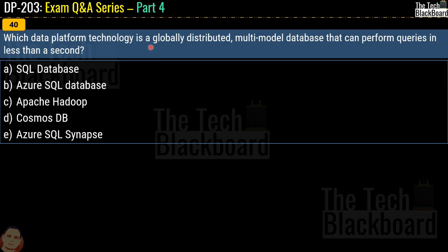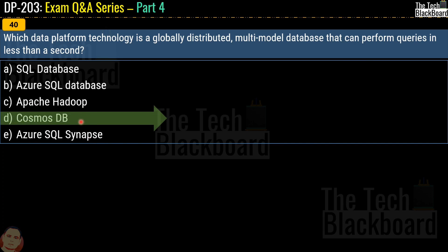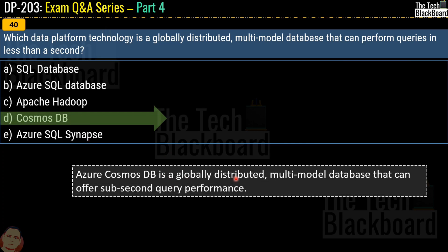Question number 40 is the last question for part 4 of the DP203 question and answer series. The question asks: which data platform technology is a globally distributed multi-model database that can perform queries in less than a second? Options are SQL Database, Azure SQL Database, Apache Hadoop, Cosmos DB, or Azure SQL Synapse. The correct answer is Cosmos DB, because Cosmos DB is a globally distributed multi-model database that can offer sub-second query performance.